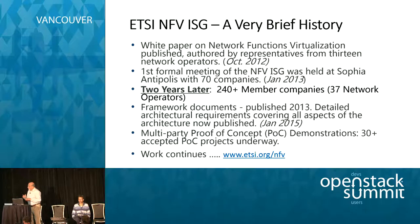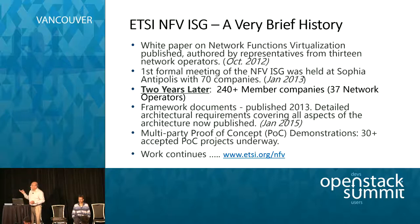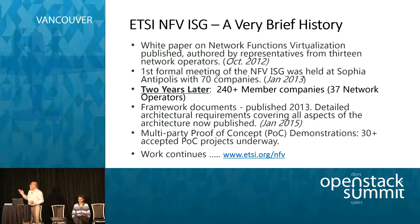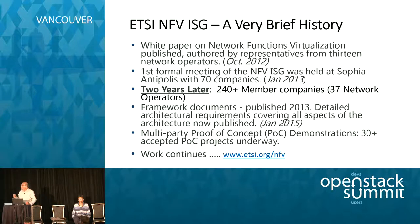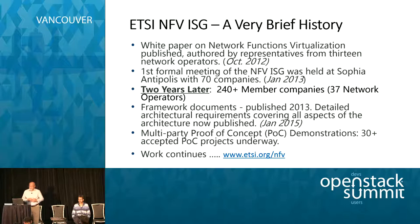A few of us got together and created a white paper to describe the problem, and created this group under ETSI — the NFV ISG, the Industry Specification Group — to focus on this problem. We started with half a dozen people who talked about this back in late 2011, got a few more together in 2012, and by the time we had our first meeting we had lots of people joining. Now it's a very vibrant community with 240 member companies and 37 network operators.